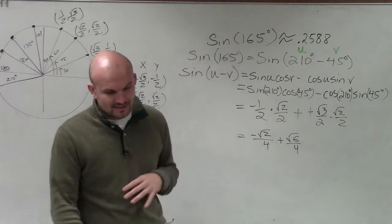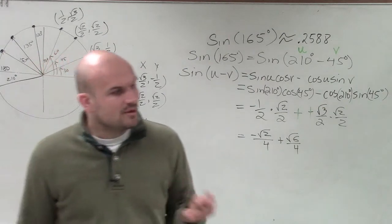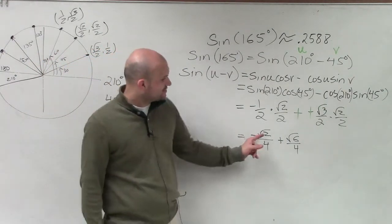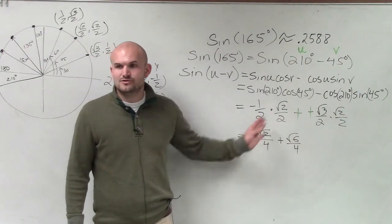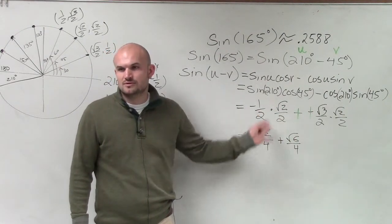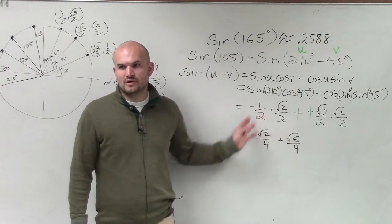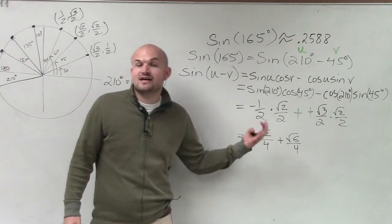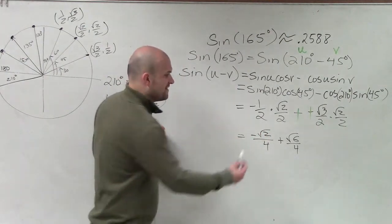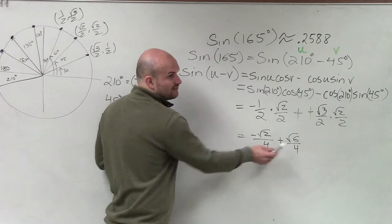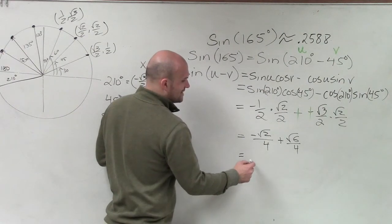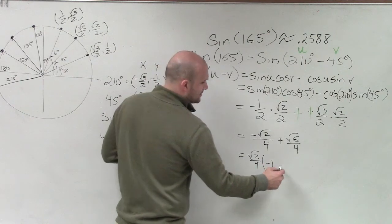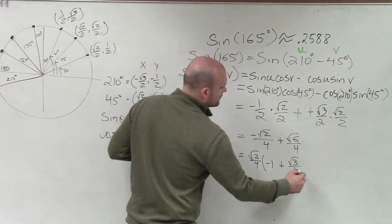Now we can go ahead and combine those if we would like to, but we can also notice that they have common factors. What is a common factor of 6 and 2? What both divides into 6 and 2? 2. But now since they're the square roots, I have to actually take out the square root 2. So if I factor out the square root of 2, I also can factor out a 4 from both of these. So my final answer is going to be the square root of 2 over 4 times negative 1 plus the square root of 3.